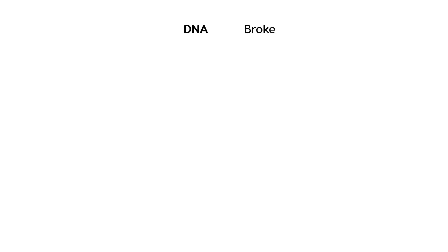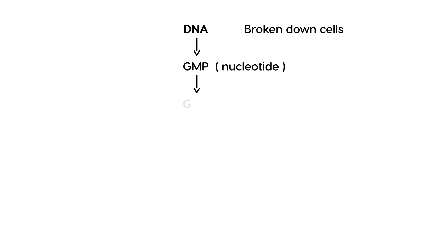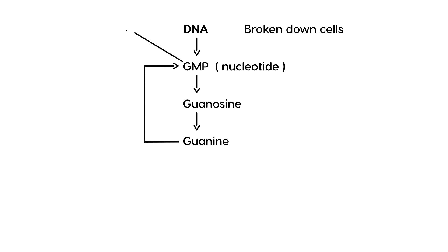Let's say you have some DNA that comes from some broken, old, dead cells. There's a very extensive pathway, but here's the simple version: it goes from DNA to GMP (guanosine monophosphate), a nucleotide. The body further breaks it down into guanosine, and then into guanine. Instead of throwing this away, the body has a mechanism of recycling it back into GMP, which is then converted back into usable DNA. This is also known as the salvage pathway.